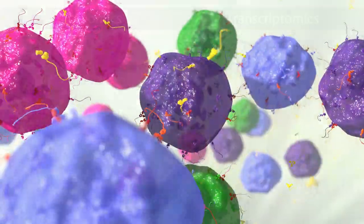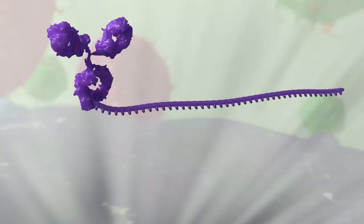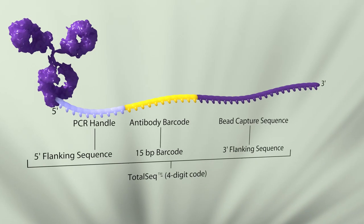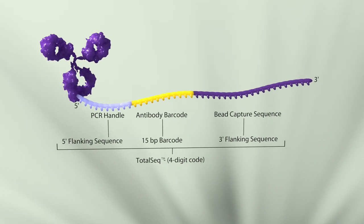Upon completion of next-generation sequencing, the identity and abundance of proteins is reflected by the number of reads corresponding to each TotalSeq barcode as part of a standard bioinformatics analysis pipeline.